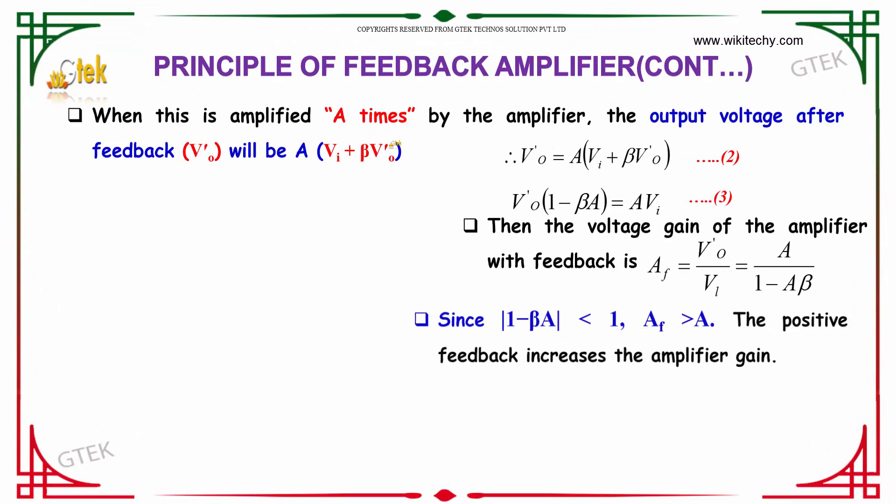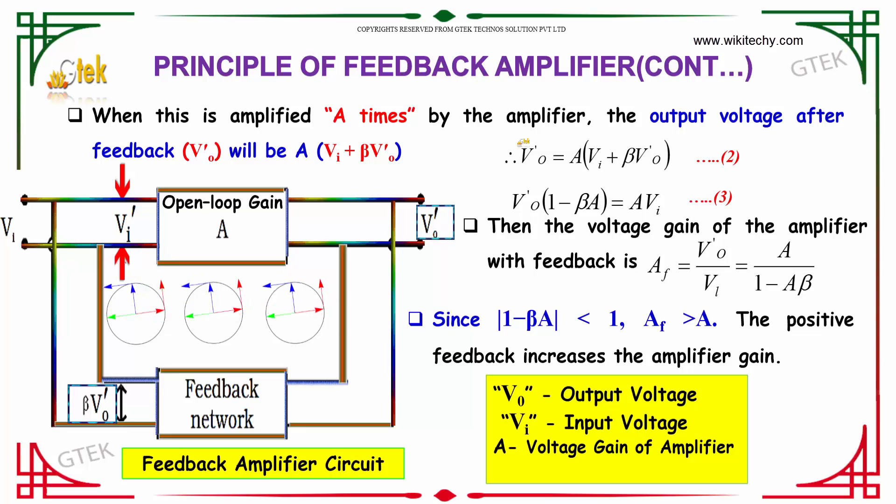When this is amplified A times by the amplifier, the output voltage after feedback V0' will be A(Vi + βV0'). Rearranging, V0'(1 - βA) = AVi.